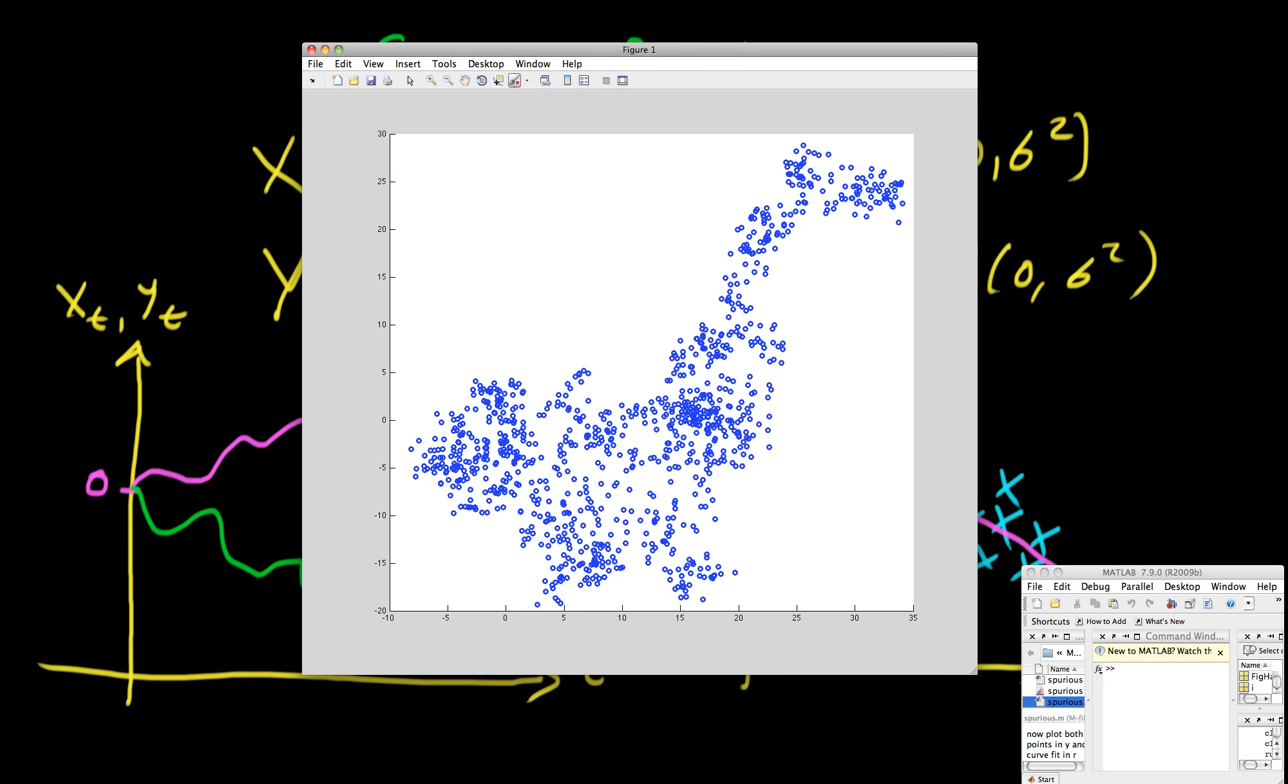So see how easy it is to draw the conclusion that you have significant relationships between two variables when in fact you have two completely independent random processes. And that's when you're using non-stationary processes in regression, and that's why you should avoid it.